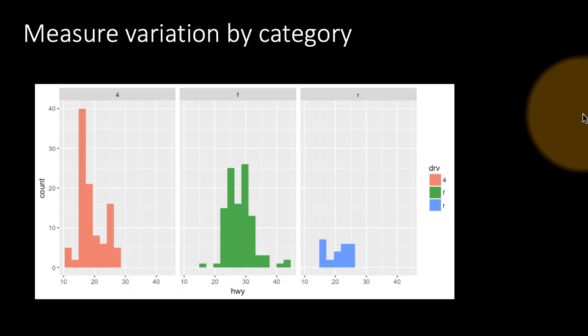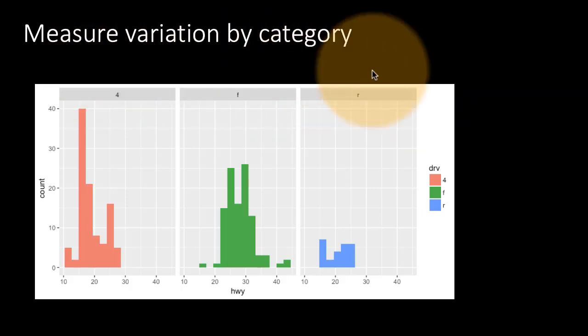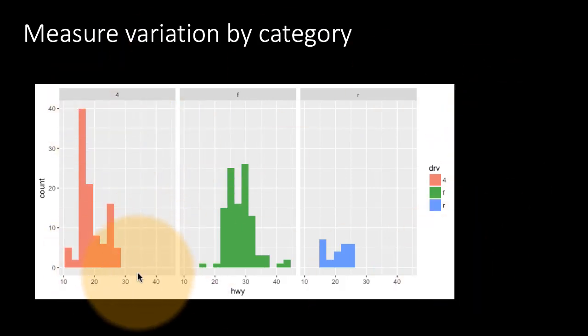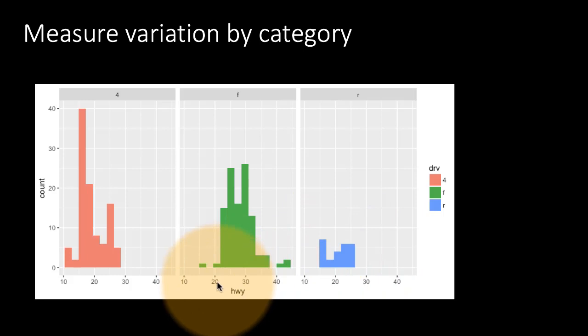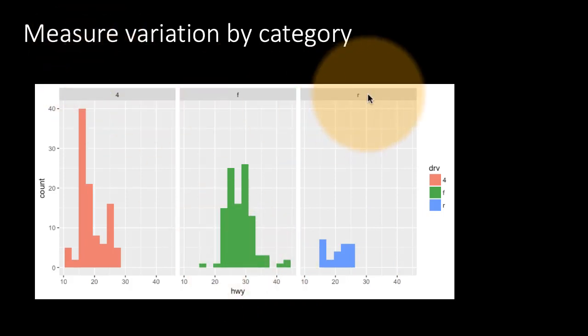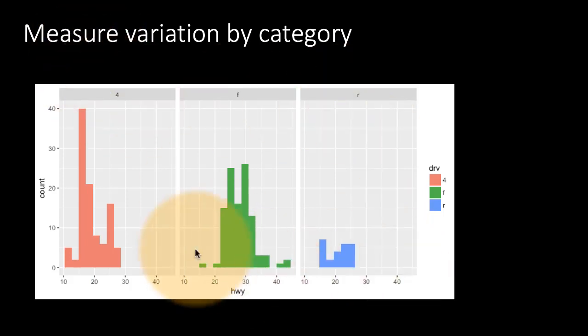Just to show you that this pattern of measure variation by category is general, not just applicable to the diamonds dataset, I'm showing you this data from our MPG dataset. We're looking at the variation of highway mileage—the histogram of highway mileage by the kind of drive of the car. We're seeing some differences we can explore.